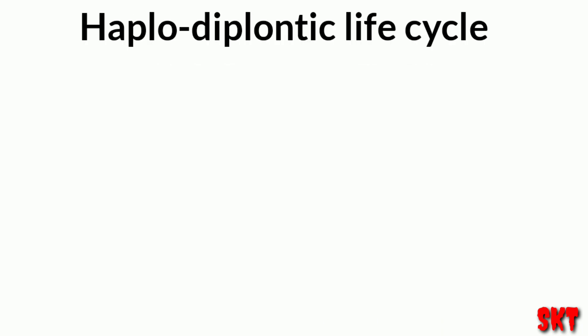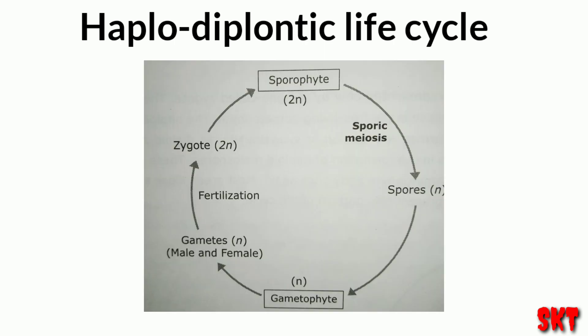The last one is the haplo-diplontic life cycle. In this, there is a diploid organism that undergoes meiosis to produce haploid spores. These haploid spores germinate and grow by mitosis into a multicellular gametophyte, which is haploid. The gametophyte produces male and female gametes by mitosis. These gametes fertilize to form a zygote, which is diploid, and the zygote germinates to form a new organism.